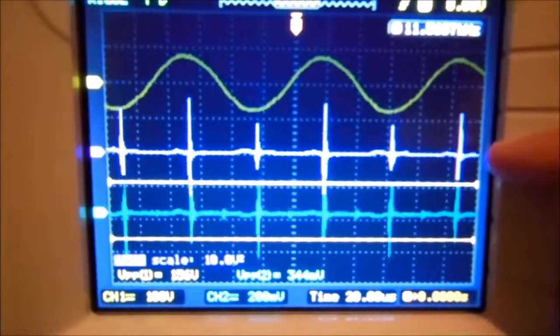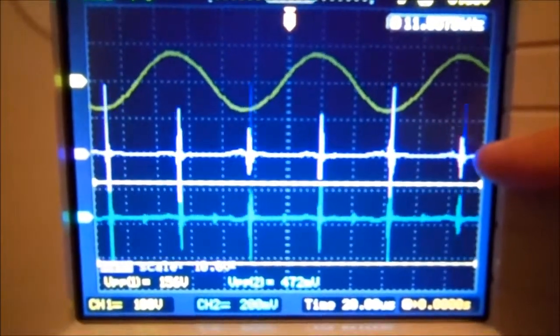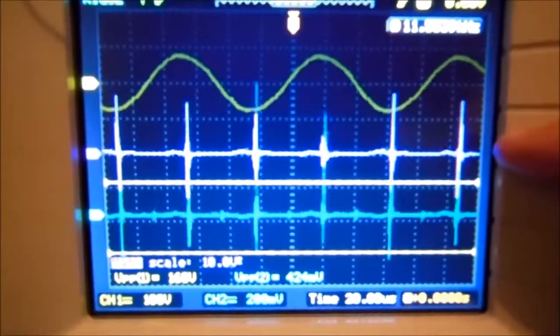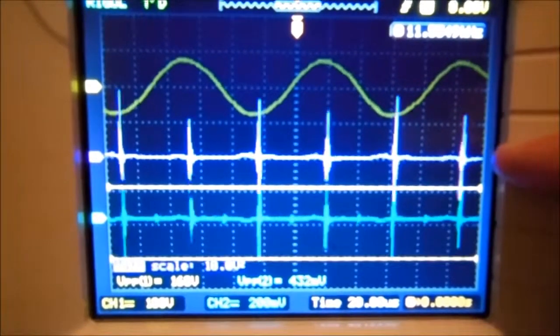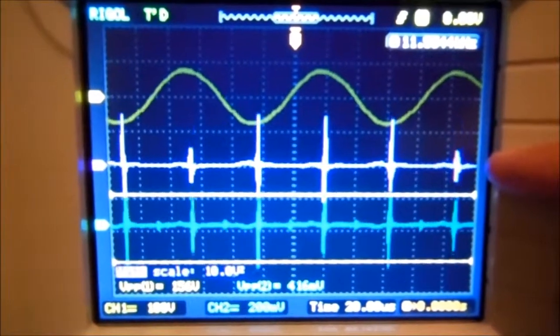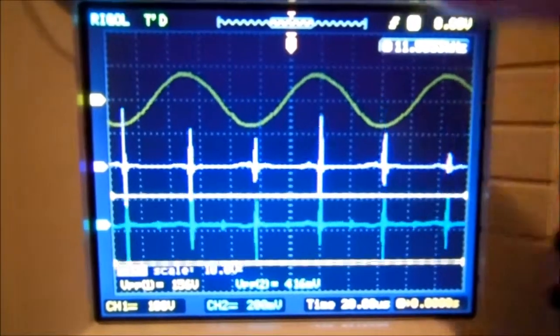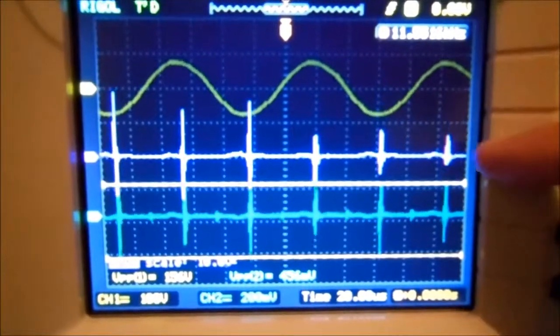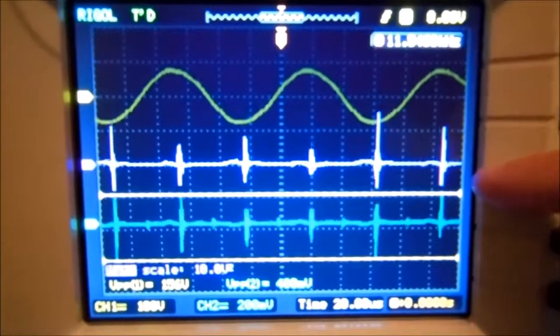And the purple one is the power, the signal of the power that I have in the circuit. This is an attempt to measure how much power I have in the load, but I don't have enough resolution to measure this properly in this oscilloscope.